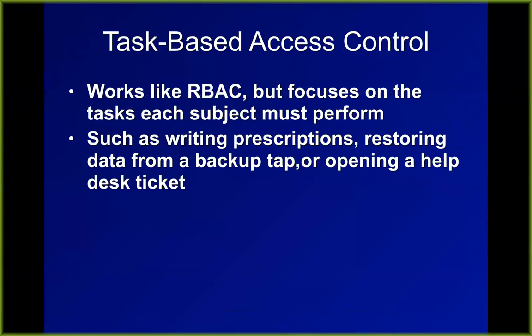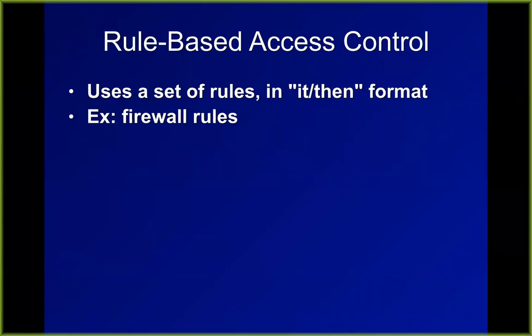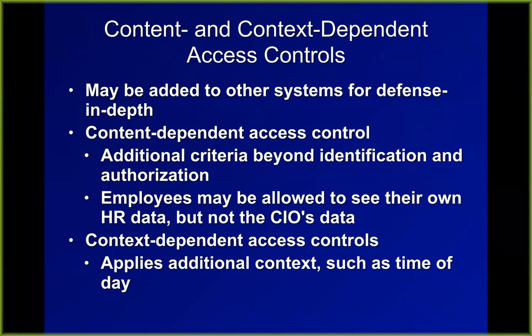Task-based access control is almost the same thing with different terminology — you determine your tasks and get certain rights to do your tasks. Rule-based access control is the logical extension, like a firewall rule where traffic going in this direction is allowed to use this port but not that port — any series of if-then rules. Appropriate for things like parental controls where children can only play games for two hours a day and can only go to G-rated websites.